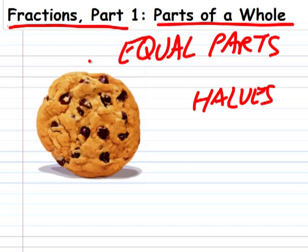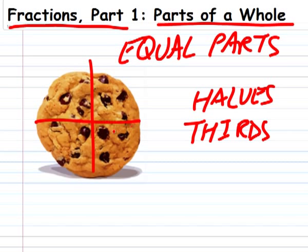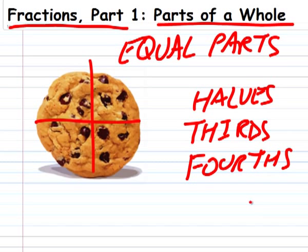Now, if my little sister tags along, we might need to break the cookie into three equal parts instead. That will be thirds. And if her friend insists on coming too, we might need four equal parts. That's fourths. It's just as easy as that.